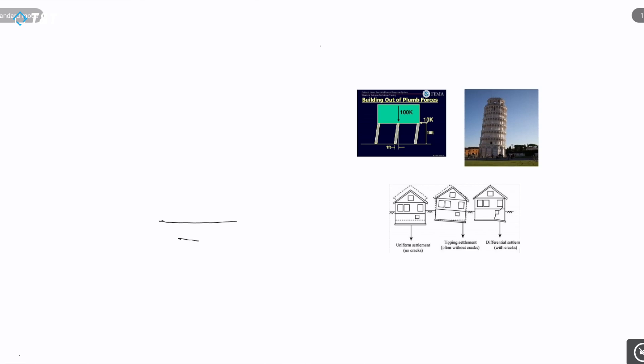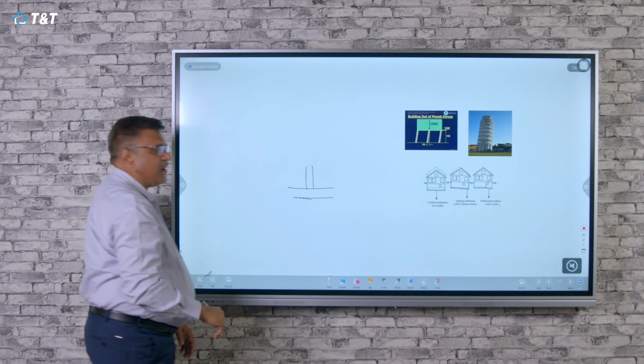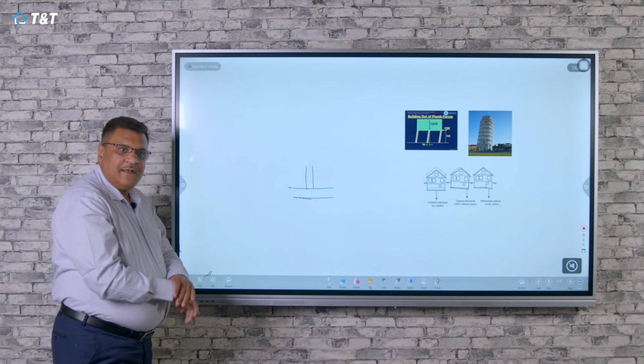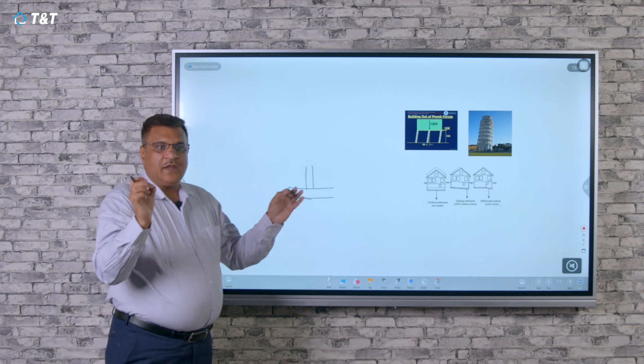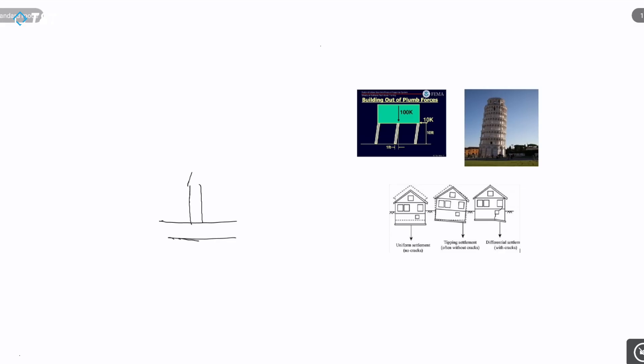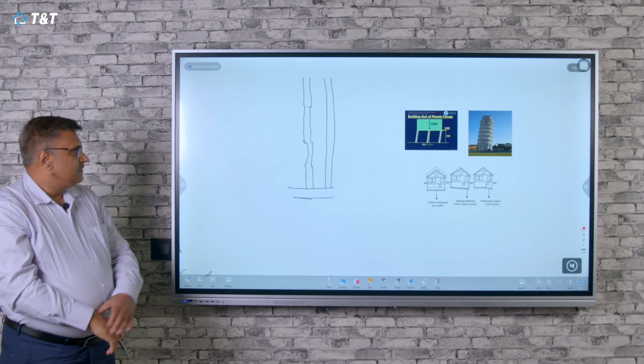Suppose I have started my column from the foundation level and put the shuttering which is perfectly vertical. While putting the shuttering to the next level, as a human error, there is all possibility that this column gets built off-vertical. It may go this way, then that way. How should it go? It should go perfectly vertical.